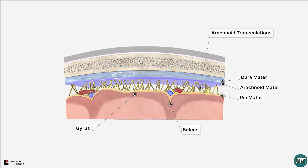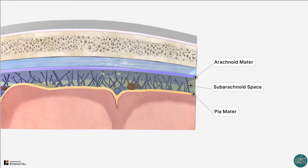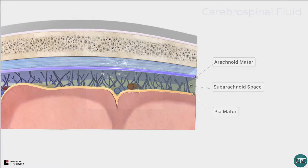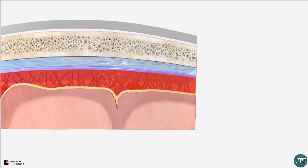Between the arachnoid mater and the pia mater is the subarachnoid space. This is a normal anatomical space that is filled with cerebrospinal fluid and also contains cerebral vasculature. Damage to one of these vessels can therefore fill the subarachnoid space with blood, and this is what a subarachnoid haemorrhage is.